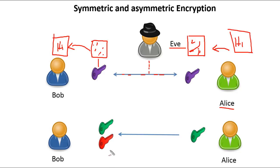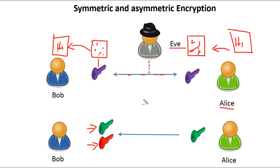So along came RSA and the public and private key method. Bob generates a set of keys that fit together, called a key pair. He decides one he will never release and keeps for himself — the private key. The other one is called the public key, which he releases to whomever he wants, even if Eve could get hold of it.